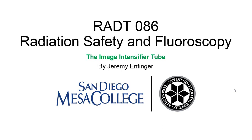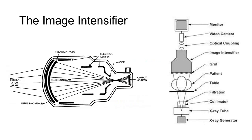The image intensifier tube. In this presentation, we're going to discuss the basic components of the image intensifier. The image intensifier, not always, but most often, is positioned above the patient on the X-ray table. The X-ray beam typically originates from an X-ray tube below the patient, underneath the tabletop, and passes through the patient, where the remnant beam interacts with the image intensifier to amplify the signal for display on the monitor. Several components within the image intensifier are required to make this work, which we'll discuss here.